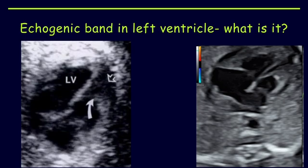In this slide you can see two images showing the four-chamber view of the heart. In the first image, what is marked as LV is the left ventricle and the solid white arrow points to the moderator band. Sometimes this moderator band can mimic a cardiac tumor. In the next image, a similar structure seen in the left ventricle is actually a false tendon.